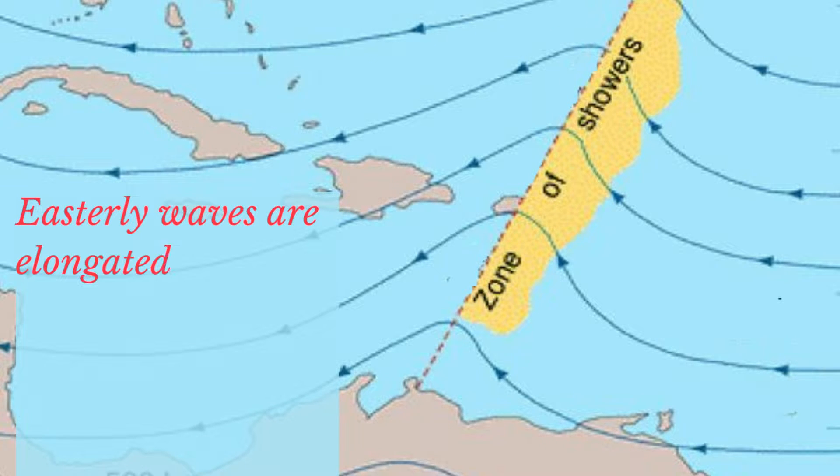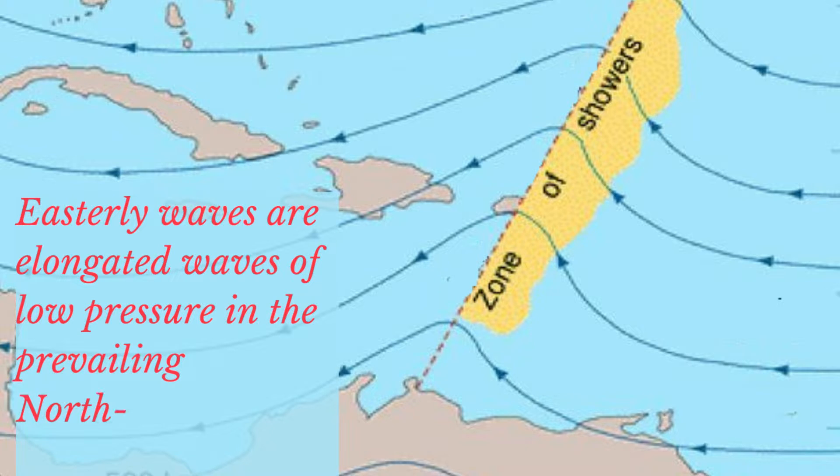Within the prevailing northeast trade winds, a weather system known as an easterly wave or tropical wave often develops.